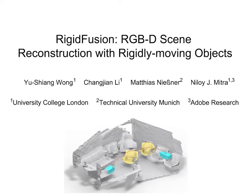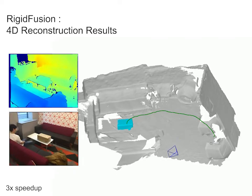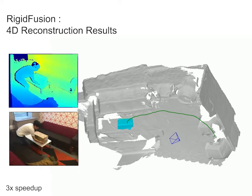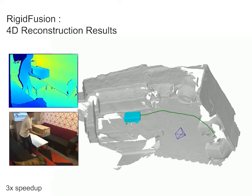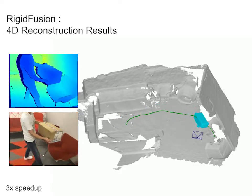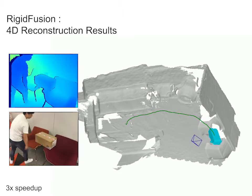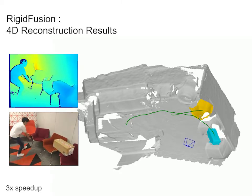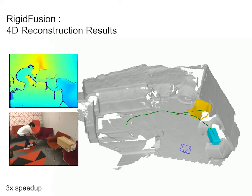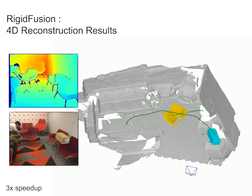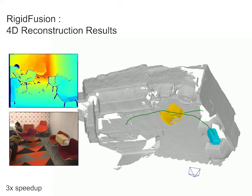We present RigidFusion, a novel method to reconstruct dynamic indoor environments. RigidFusion is able to handle challenging scenarios where both background and foreground have large motion. Our method does not require learning a prior of the moving object and is capable of producing a full scene reconstruction as shown on the right hand side.